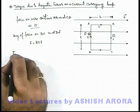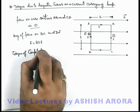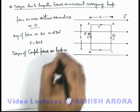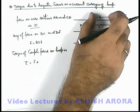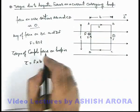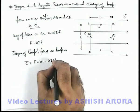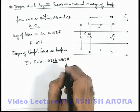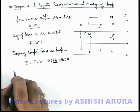So here we can calculate the torque of the couple forces on the loop. This torque can be written as the force magnitude multiplied by the separation between the two forces, which is b (the breadth of the loop). So this can be written as BiLb, which can be written as BiA, where the product of l and b is the area enclosed by the loop.